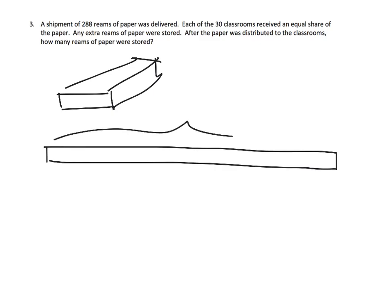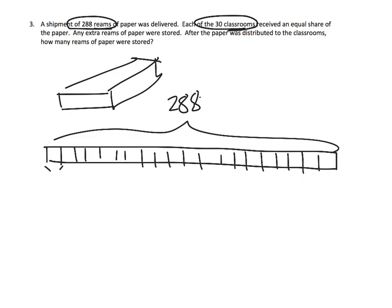So I'm going to draw a tape diagram to represent this. This represents the 288 reams of paper. Each of the 30 classrooms received an equal share. So we're going to chop these 288 into 30 classrooms. Plus we have some extras. We need to figure out how many extras are there.